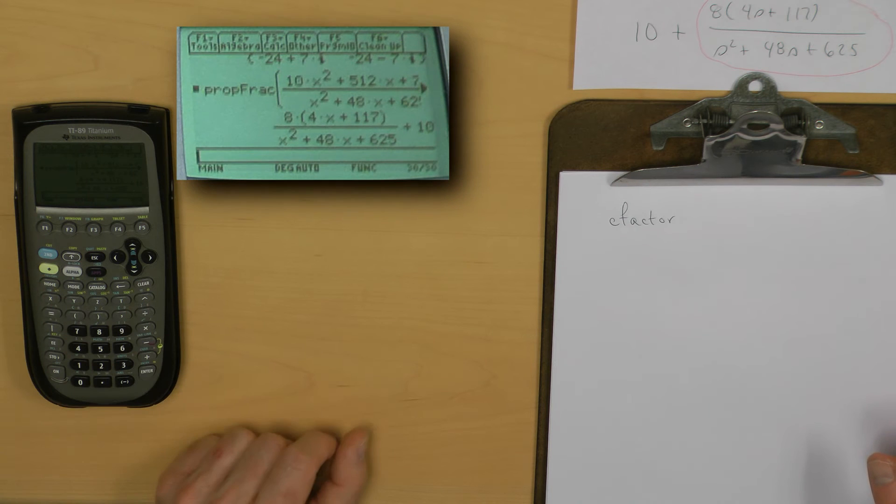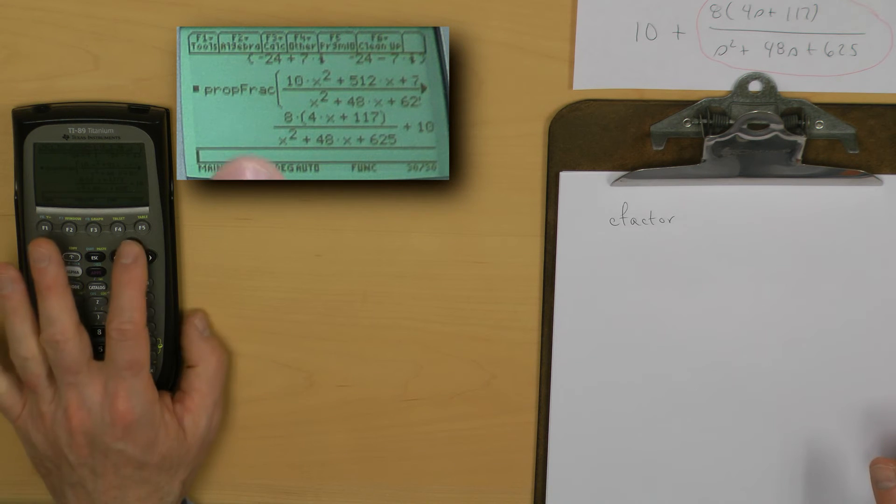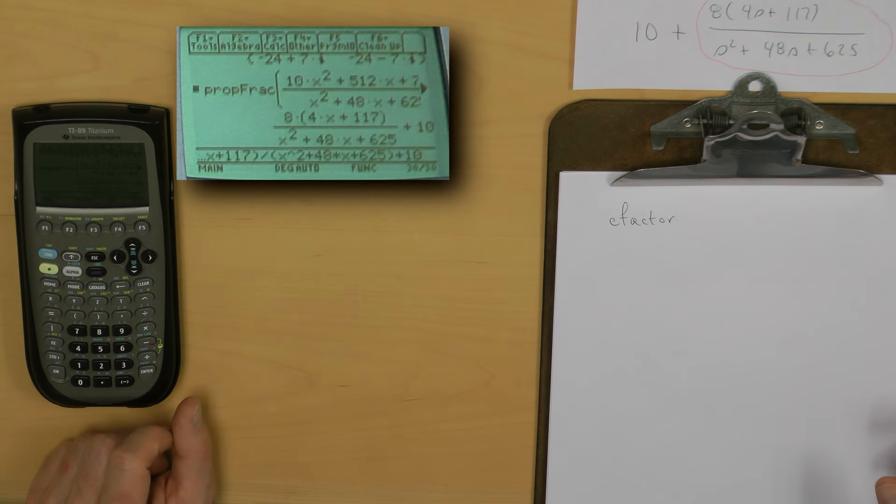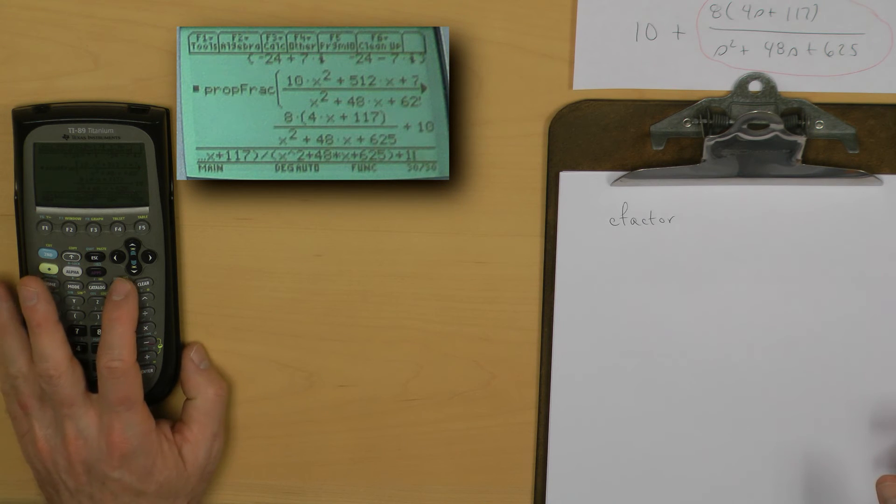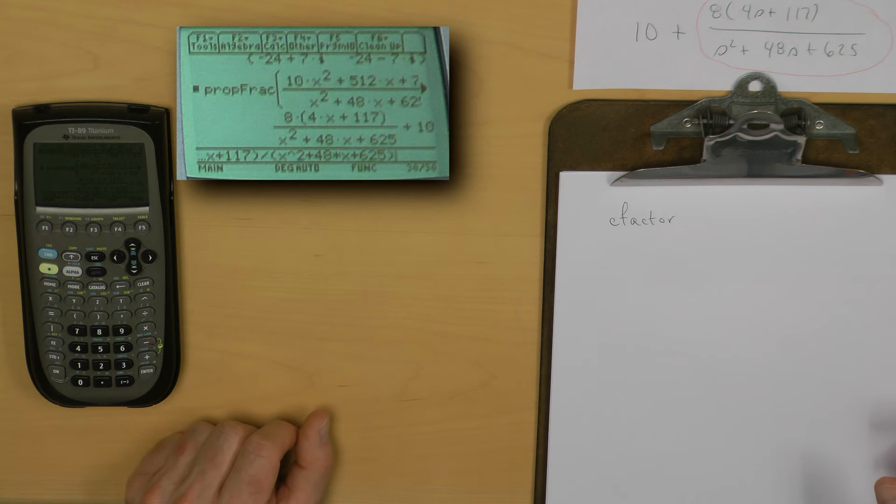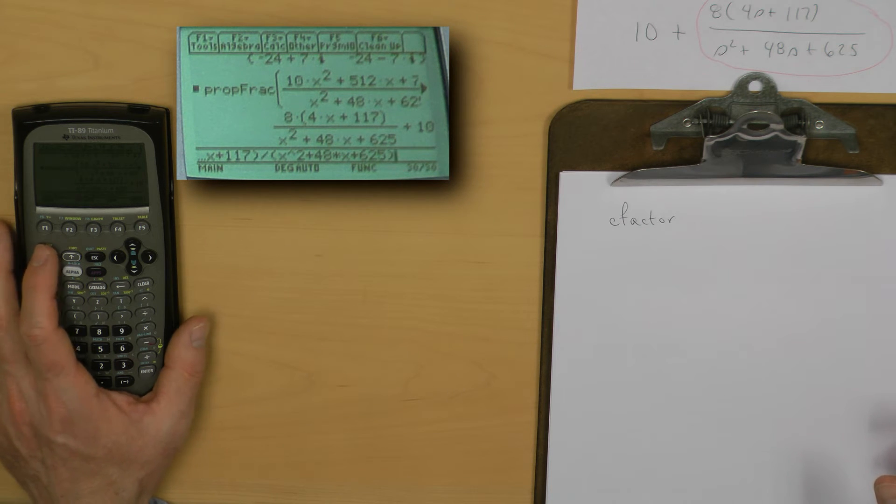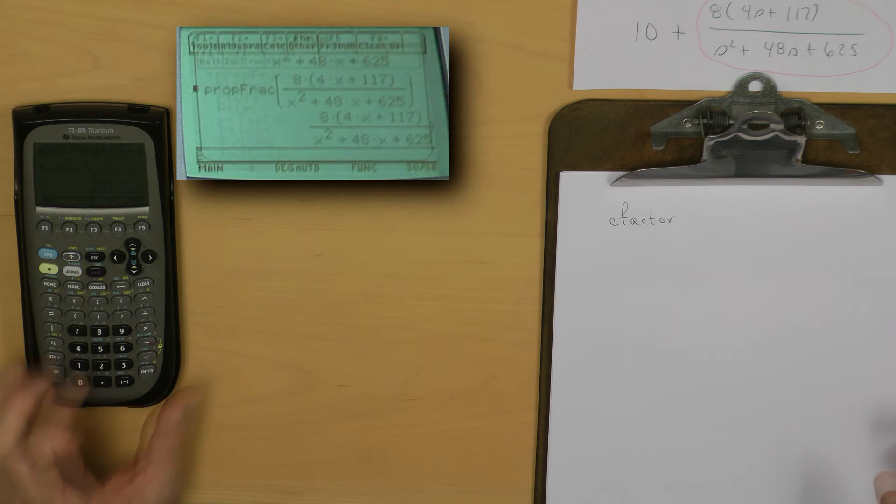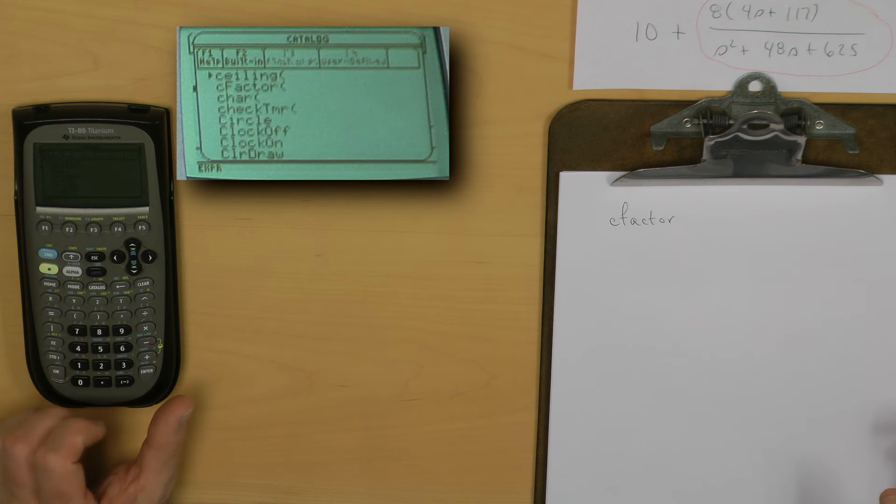I'll clear that input line. I will go up and grab the total expression, capital F of S, and hit the enter key. I need to get rid of that 10 piece. Let me now go to the far left by the second left arrow and find I have the complex factor expression in the calculator somewhere hiding by the C's. Let me go down and get it.